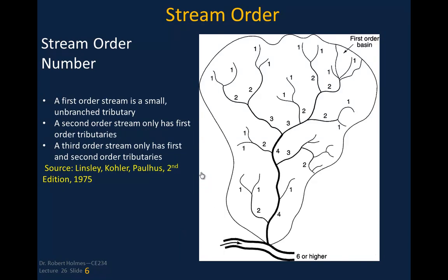When we talk about stream order number, we look at a drainage basin where first-order streams come together to form second-order streams. A first-order stream is a small, unbranched tributary. A second-order stream occurs when two first-order streams join. A third-order stream is formed by two second-order streams, and so on. Importantly, a second-order stream joined by a first-order stream does not make a third-order stream — you need two second-order streams to form a third-order stream.